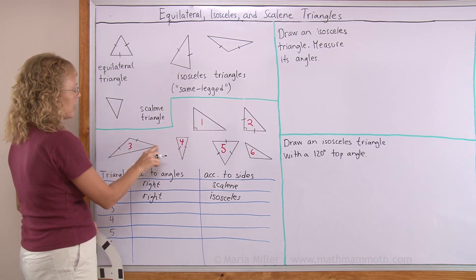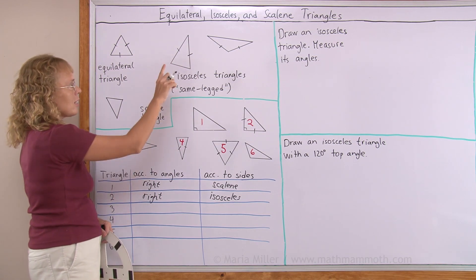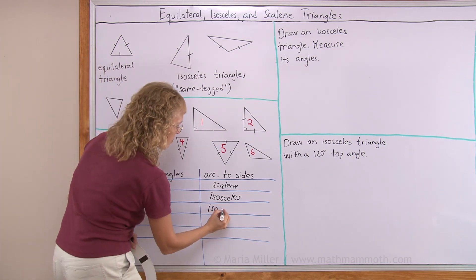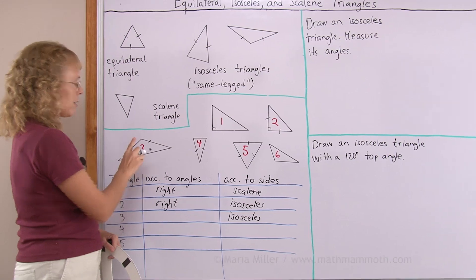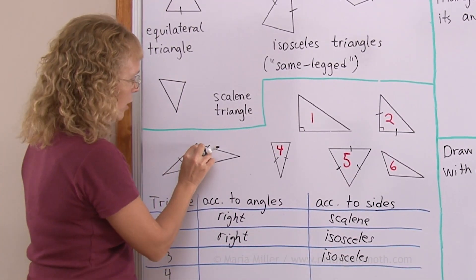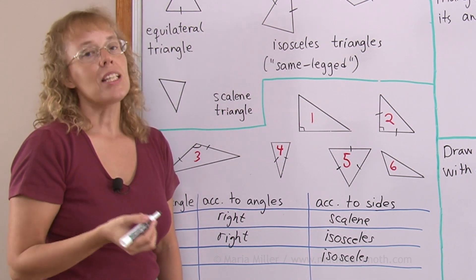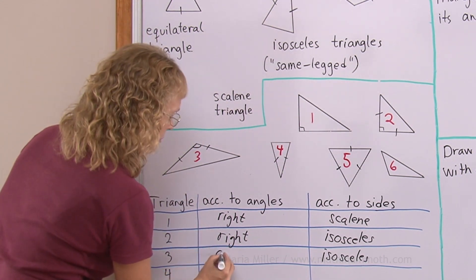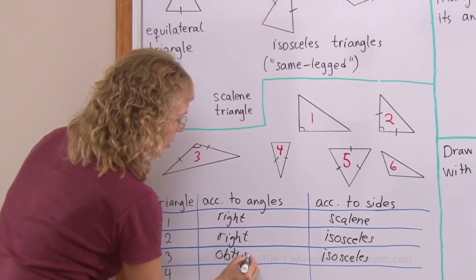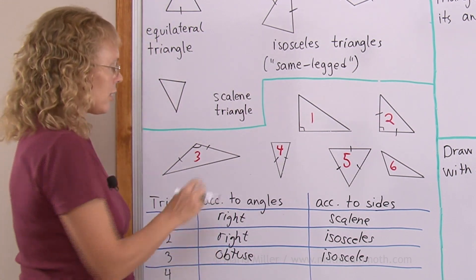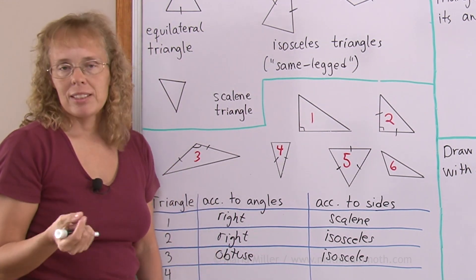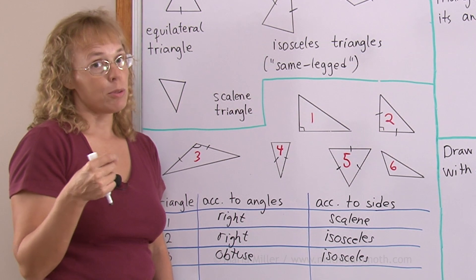This one has two sides that are the same. So it is isosceles. And as far as the angles go, you notice here this angle here is an obtuse angle that makes it an obtuse triangle.